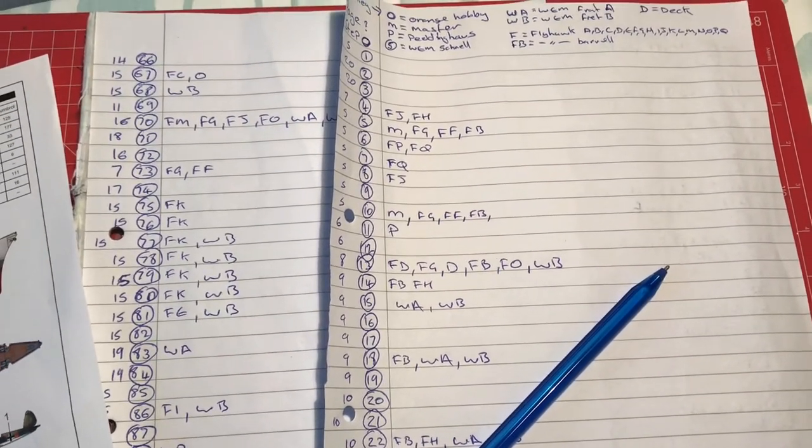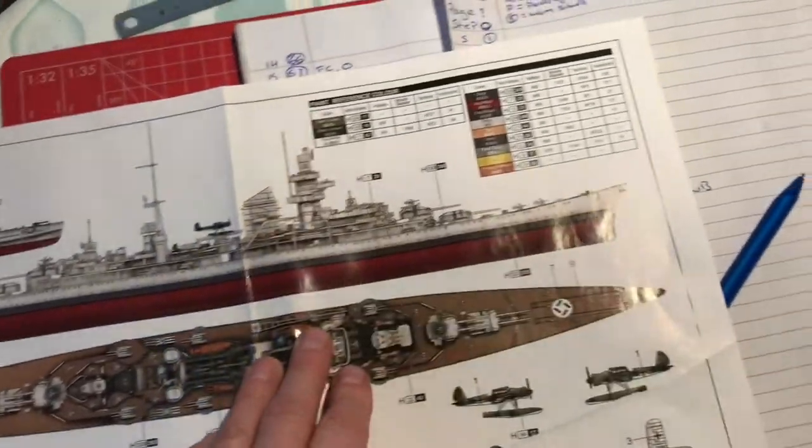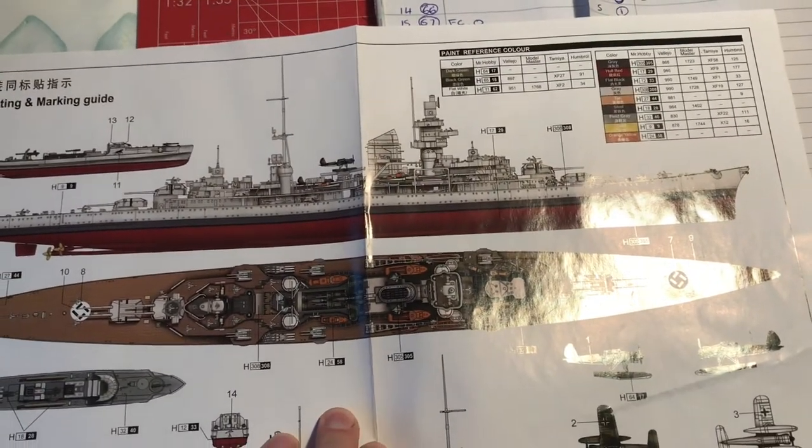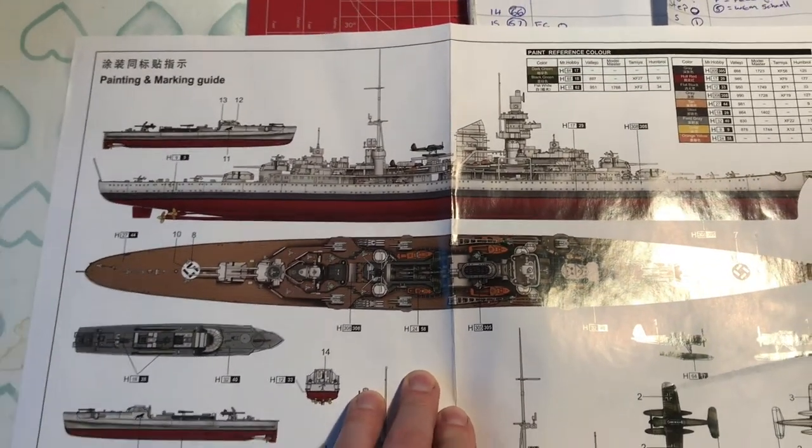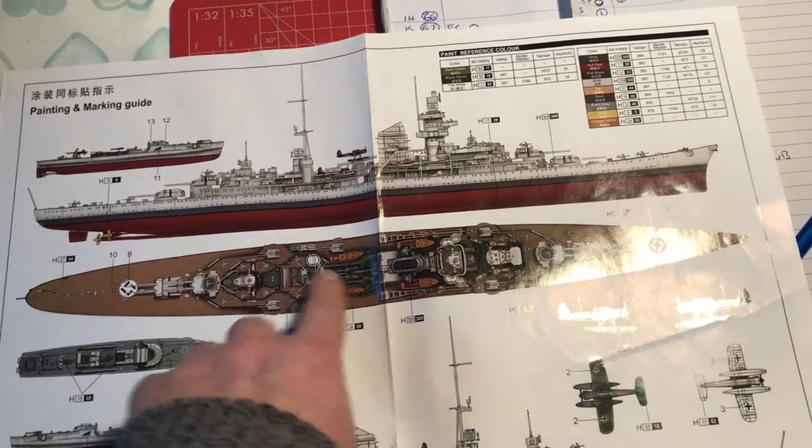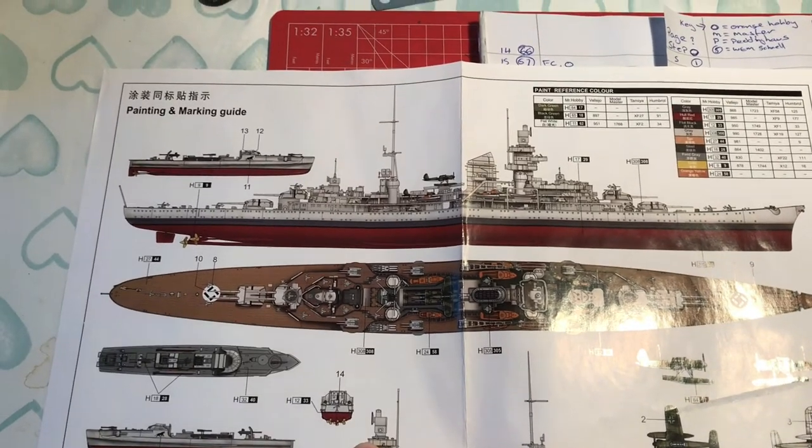The last thing that we want to talk about is paint. So you have a paint chart, and in the case of Hobby Boss and Trumpeter you find that you get these single page color illustrations with not much commentary throughout the instructions, if any.